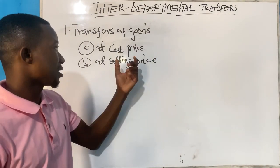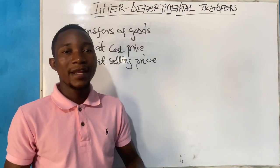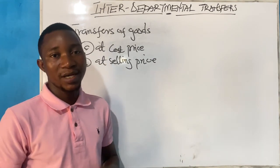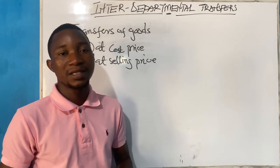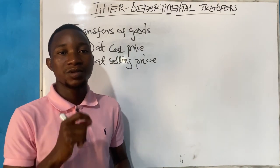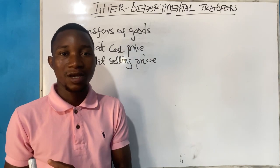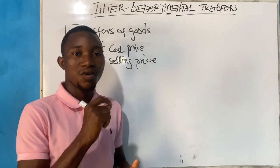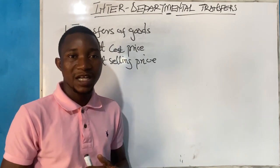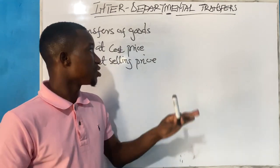We will be looking at the accounting arrangements. Any time there is a transfer of goods at cost price, the accounting treatment is that you add the cost of goods transferred to the cost of goods available for sale of the receiving department. Then you deduct the cost of goods transferred from the cost of goods available for sale of the giving department.